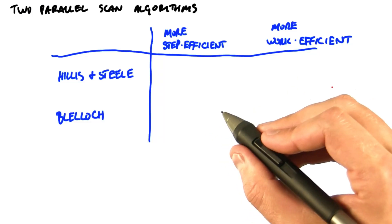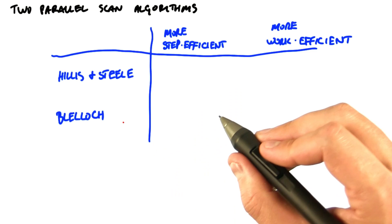The two algorithms we're going to look at are by Hillis and Steele and by Blelic. Both of them are going to be more efficient than the implementation we just saw, but they have different performance characteristics.